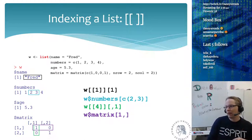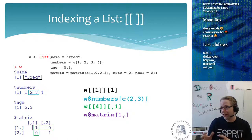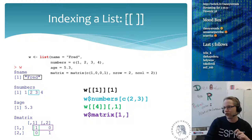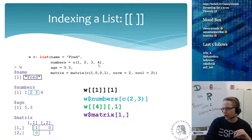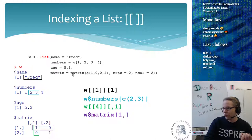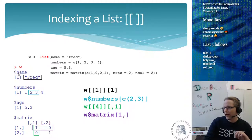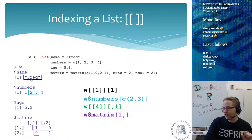One more thing about indexing: you index using square brackets, unless you have a list. The list is a special type because it can contain anything, so you index a list using double square brackets. If I make a list with a character named 'fred', a numerical vector called 'numbers', a single numeric called 'age', and a matrix at the fourth position, I can type that variable to see its contents.